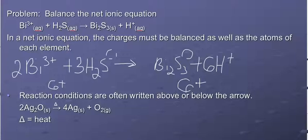We can indicate reaction conditions above or below the arrow. The triangle means heat. So in a decomposition reaction like this one, it often requires heat for it to occur. Or if you add a catalyst, that would also appear above the arrow.